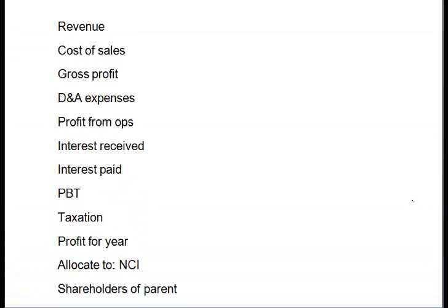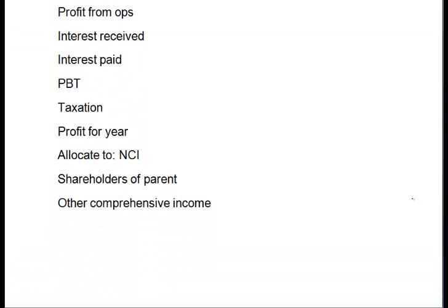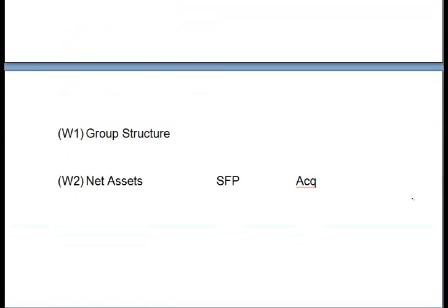In addition, we've been asked to prepare an income statement, and at the bottom of my income statement I've got some representation for the NCI. My standard workings cover group structure, net assets, and key dates. As far as the group structure is concerned, we've got a fairly simple structure in which the parent company MIMO has 75% of the subsidiary — therefore the NCI have 25%.